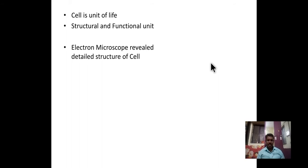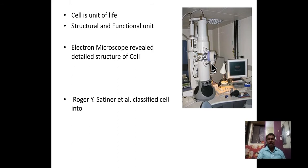The scientist Robert Hooke first observed the cell under a compound microscope and said the cells looked like a brick — a rectangular structure he observed under the microscope. After the invention of the electron microscope, the details of the cell were revealed and scientists identified every particular characteristic feature of the cell and cell organelles.